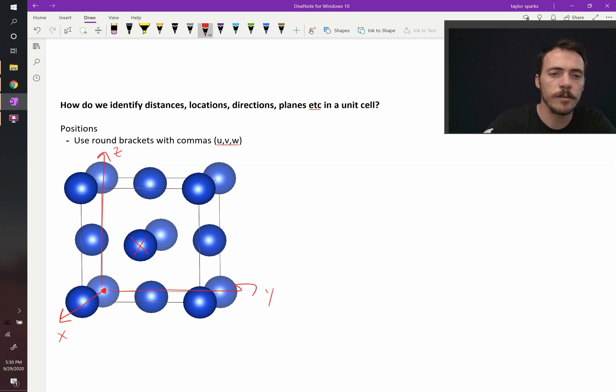well, that one's on the front face. So we're going to come all the way forward in the x direction. We're going to move over by half a unit cell in the y and up by half a unit cell in the z. Therefore, this thing gets round brackets with commas, and it's going to be 1, 1 half, 1 half. That would be the Miller indices for that position in the unit cell.